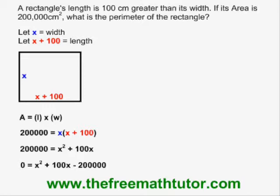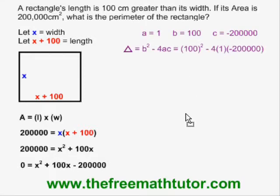Now I have a choice of using factoring or the quadratic formula to find the two zeros. I'm going to use the quadratic formula this time. So I define my a, b, and c, and then I plug them into the delta formula to find the discriminant, which is 810,000.